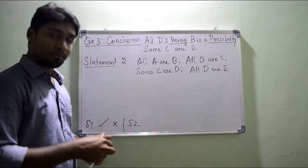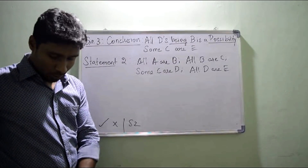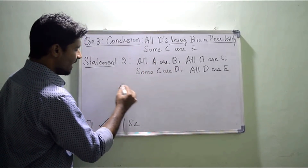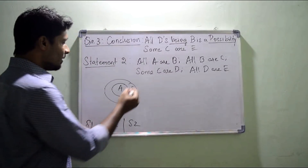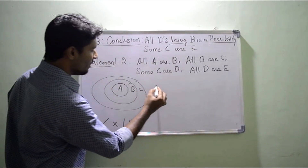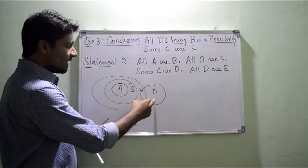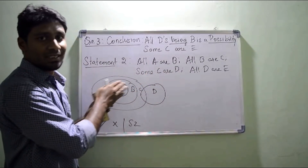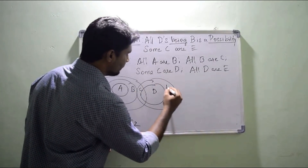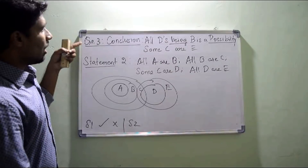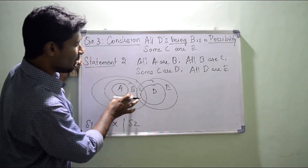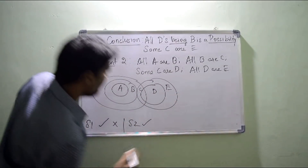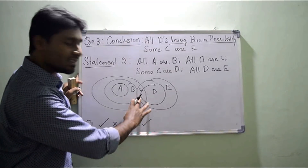Since I have four statements, as I told before, don't go for any possible diagram — just draw only one diagram, that is more than sufficient. My first diagram: all A or B, then all B or C, then some C or D, and then all D or E. I can draw a possibility that D can come inside B and A also, but don't go for possibles if you're getting a lot of statements in reverse syllogism. Now check the conclusions: all D being B is a possibility — can all D come inside B? Of course yes, so it's true. And some C or E — is it exactly true here? Yes, so both are following.